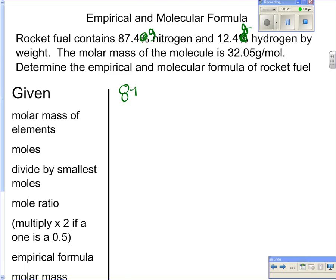So that's our given, 87.4 grams of nitrogen. Don't worry about diatomics here. No empirical formula do we worry about diatomics. And 12.4 grams of hydrogen.